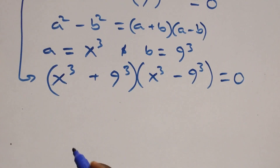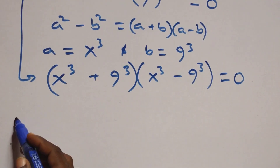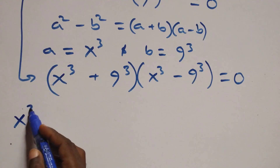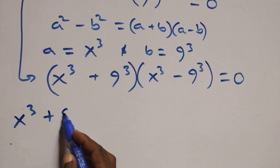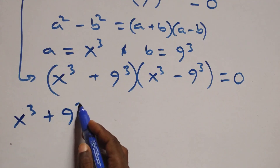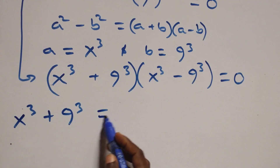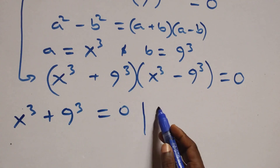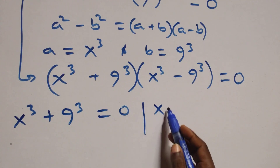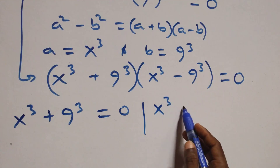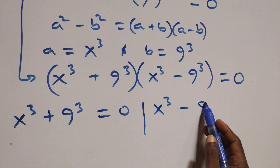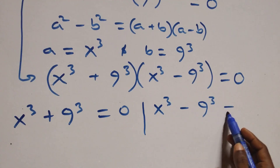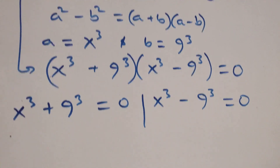We have two possible cases: first, x raised to the power 3 plus 9 raised to the power 3 equals to 0, or we have x raised to the power 3 minus 9 raised to the power 3 equals to 0.